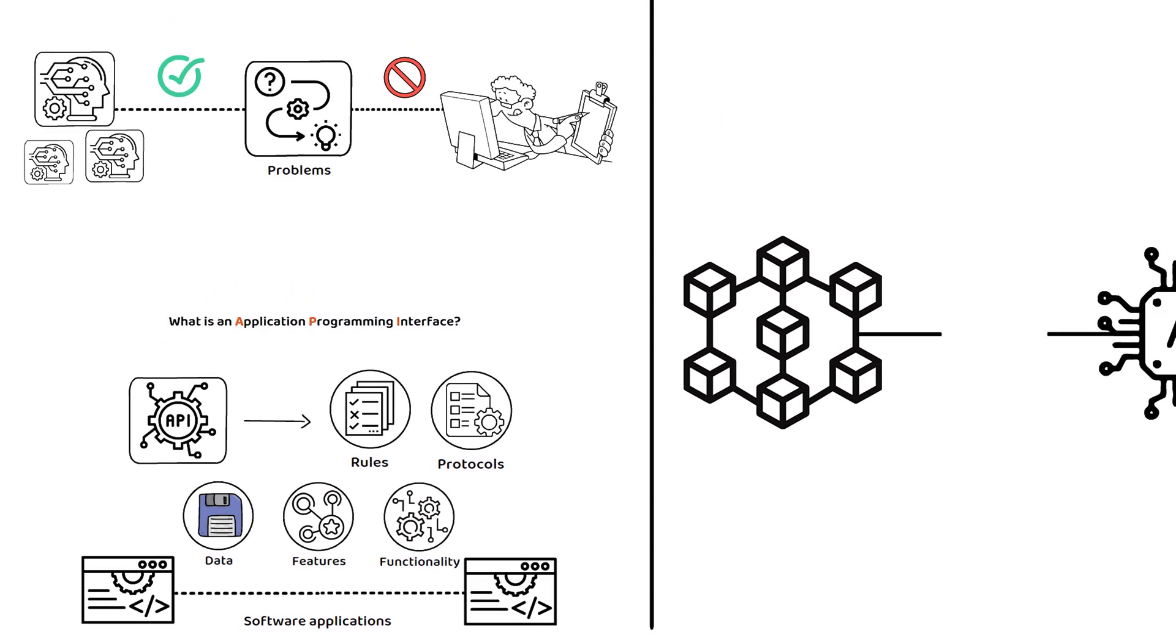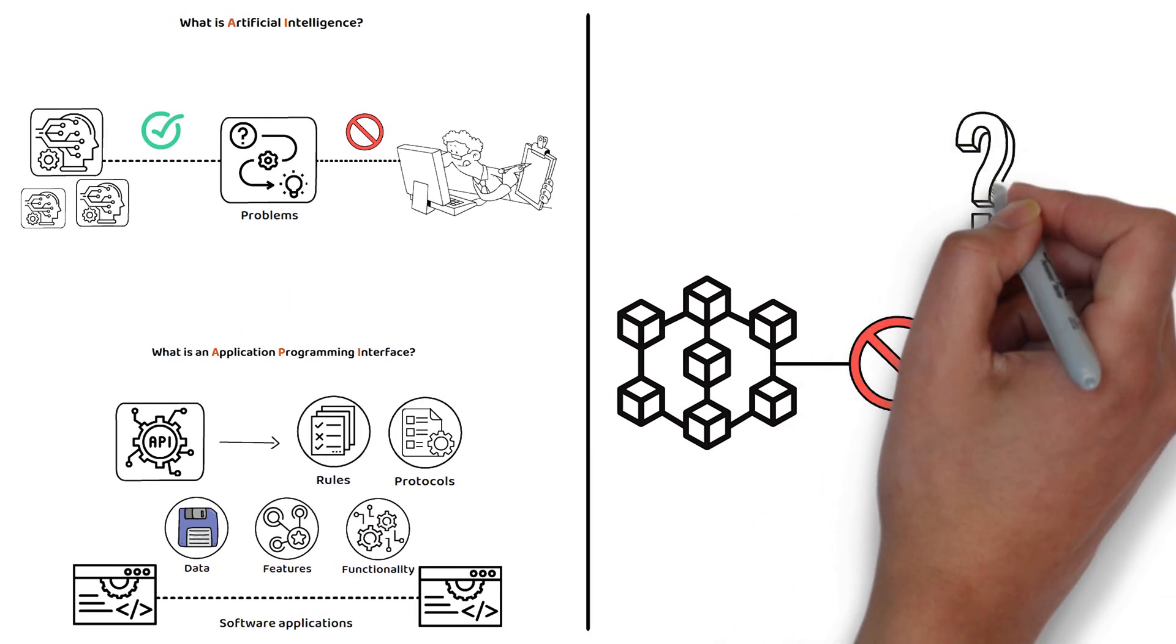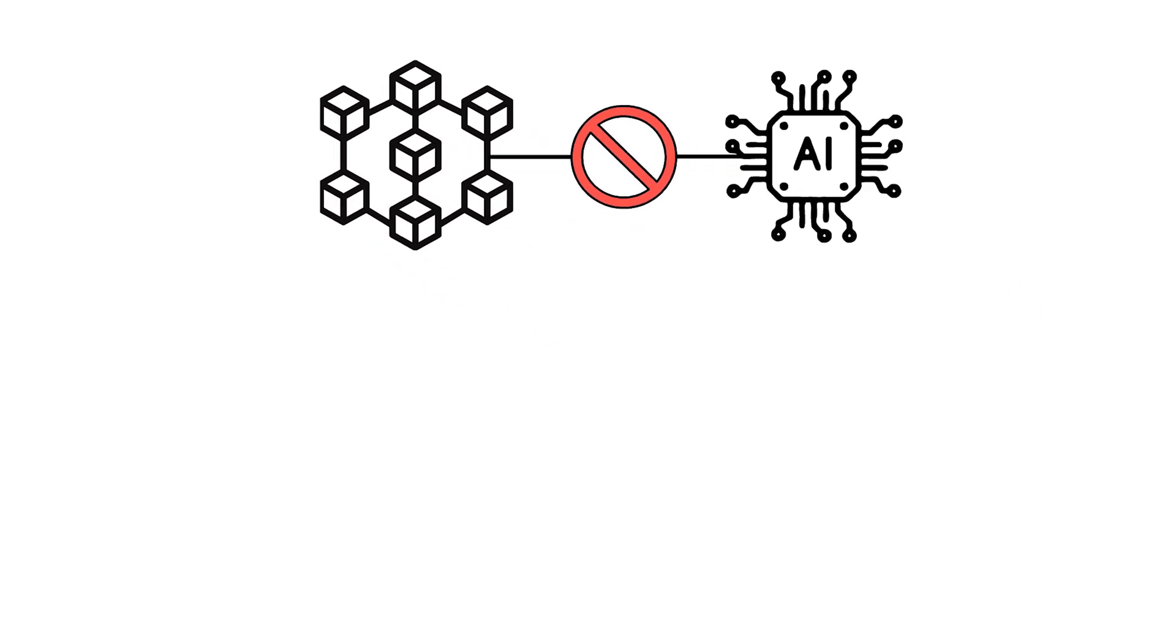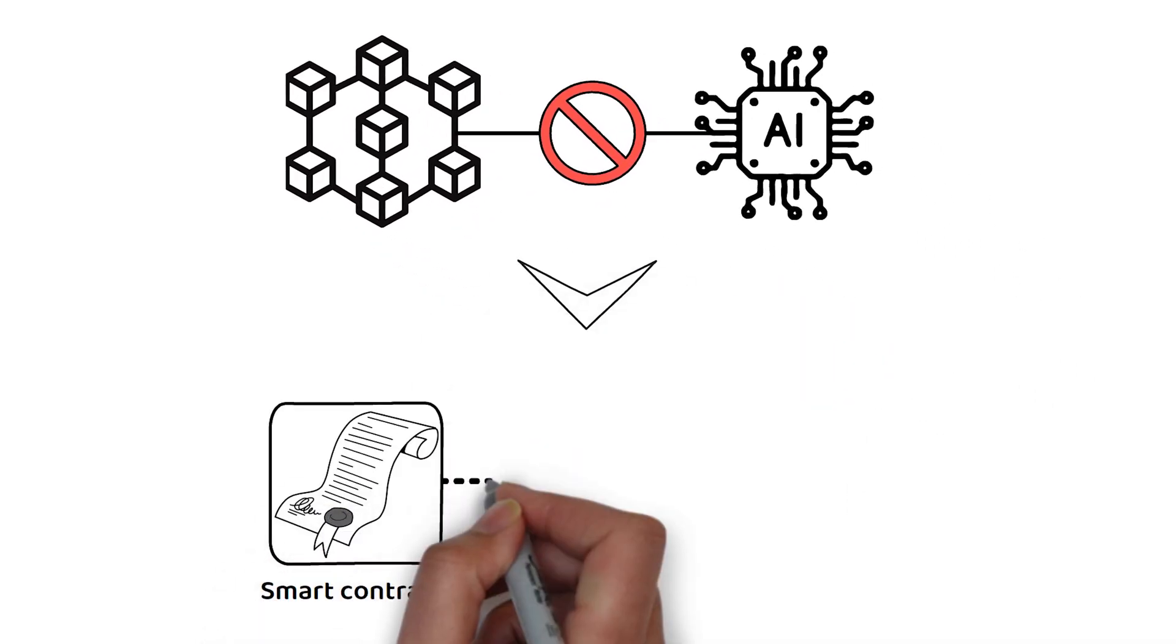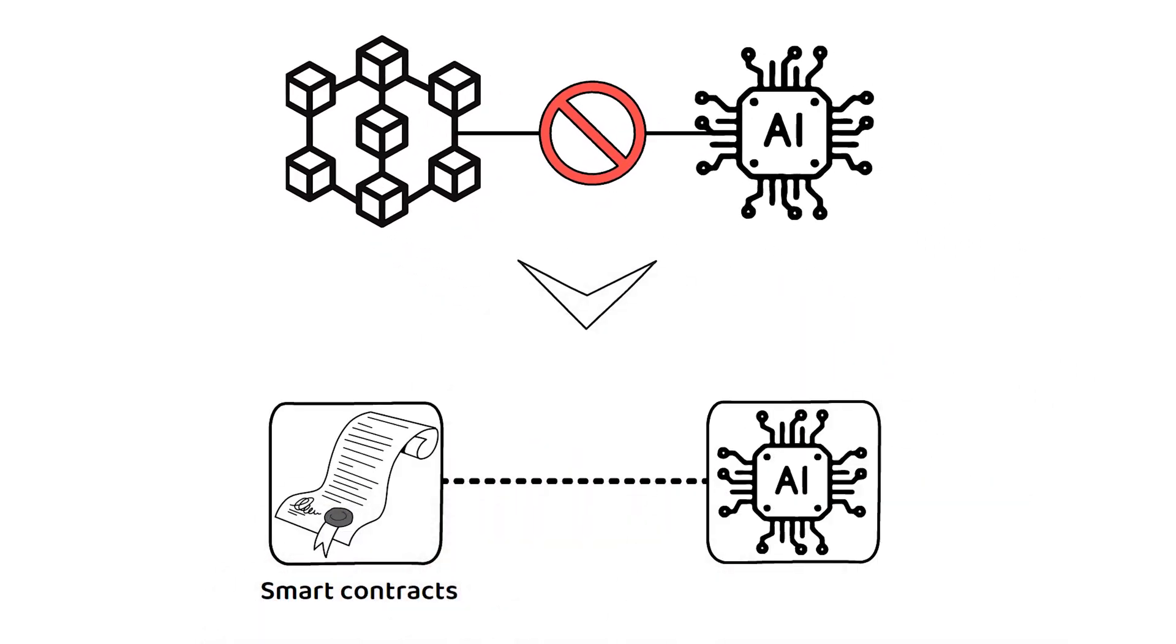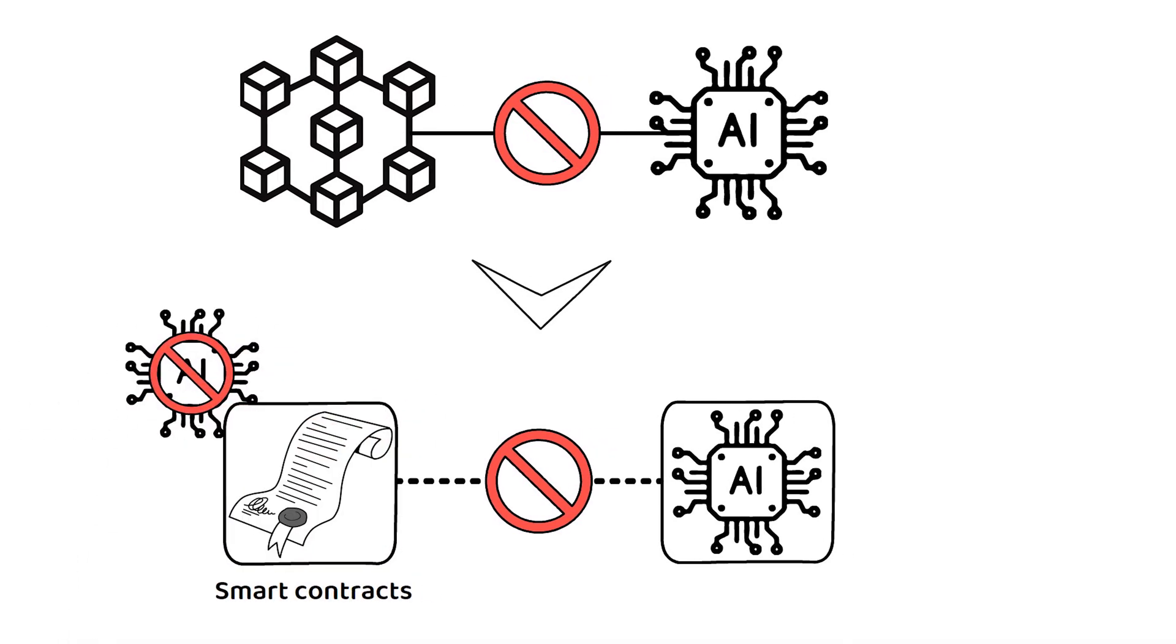So, why doesn't conventional blockchain include AI models usually? Simply put, current smart contracts cannot run AI models and it is most impossible to integrate an AI model into a smart contract mostly due to the following three reasons.